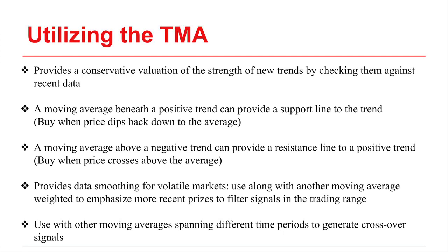A resistance line occurs when the moving average is above a negative trend. In this case, the buy signal is generated when price punches through the resistance line and crosses the triangular moving average. The TMA provides effective data smoothing for volatile markets, so it works well with moving averages weighted to emphasize more recent prices as a way to filter signals in the trading range, or basically to double-check whipsaws in faster averages.